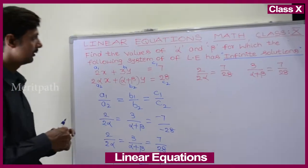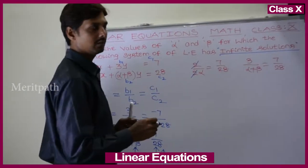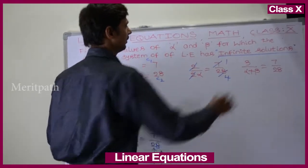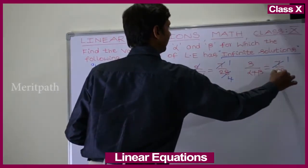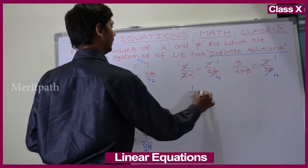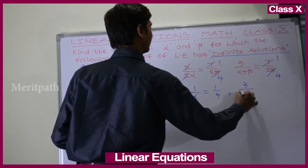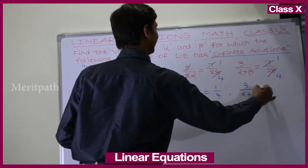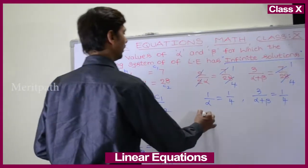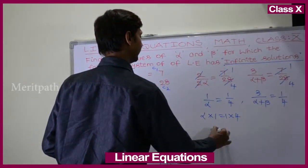Let us cancel numerator and denominator. 2 and 7 cancel with 28 — 1 time and 4 times — giving: 1 by alpha equals 1 by 4. Similarly, 1 by alpha plus beta equals 1 by 4. By cross multiplication, alpha equals 4.